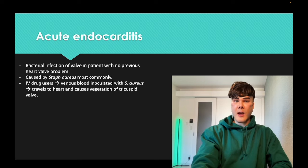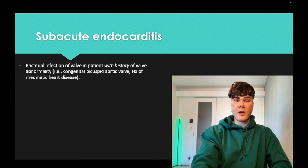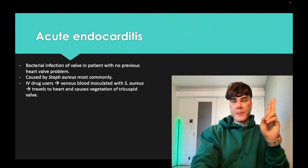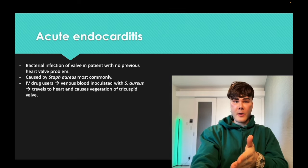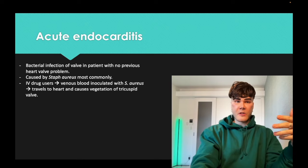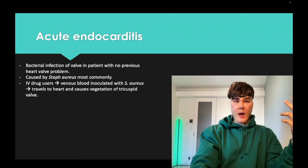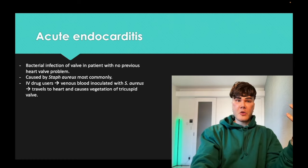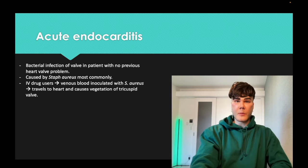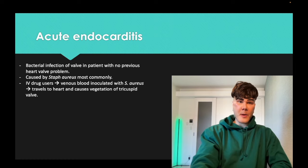IV drug users can get inoculation of the veins going back to the right side of the heart, causing tricuspid lesions. On the USMLE, they won't play trivia asking which valve is most commonly affected. Instead they'll say 24-year-old IV drug user with high fever and high leukocytes has a 2/6 holosystolic murmur that increases with inspiration — that's tricuspid regurg. Whereas a 2/6 holosystolic murmur that increases with expiration would be mitral regurg.